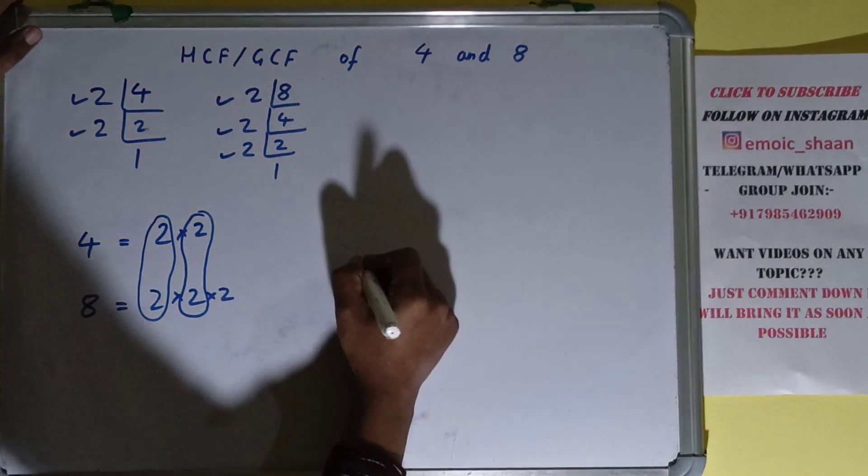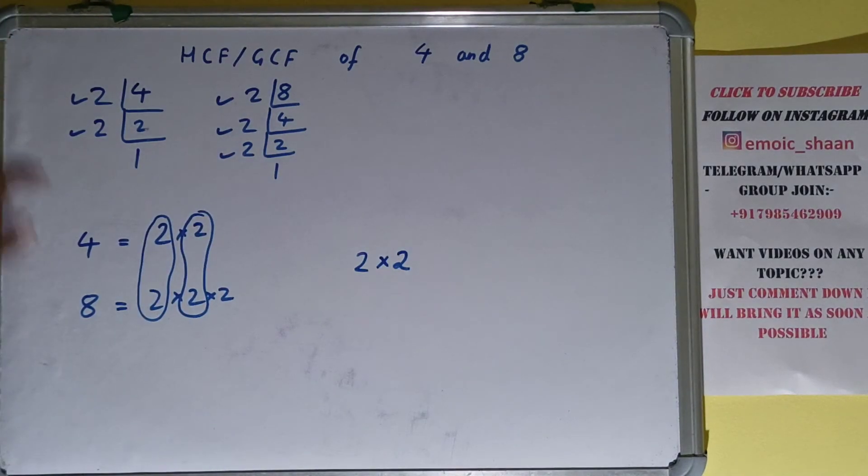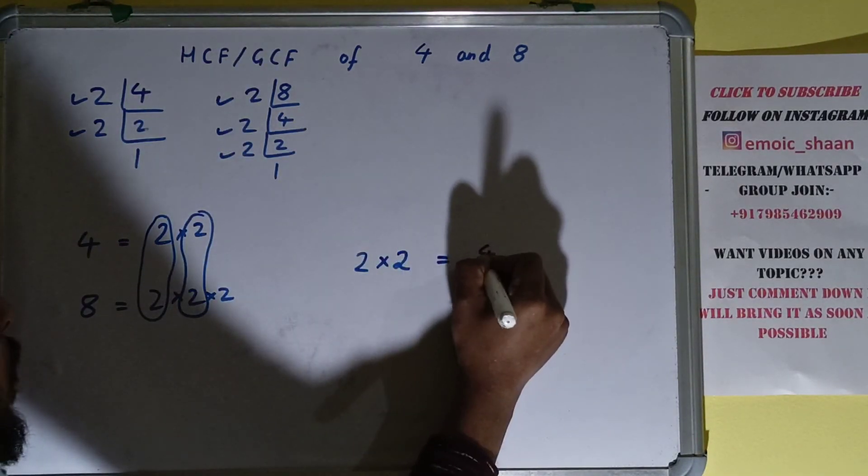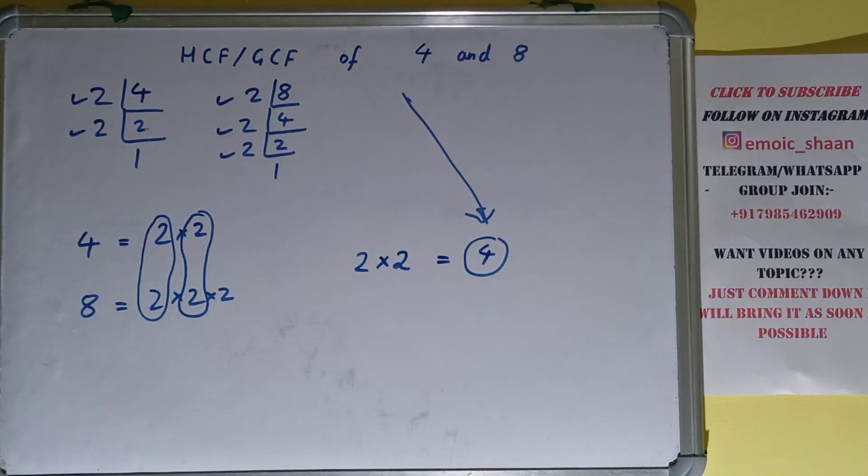So what we got? We got 2 pairs of 2 in common, right? So our answer will be 2 into 2, that is 4. So your answer, or you can say the HCF or GCF of 4 and 8, is 4.